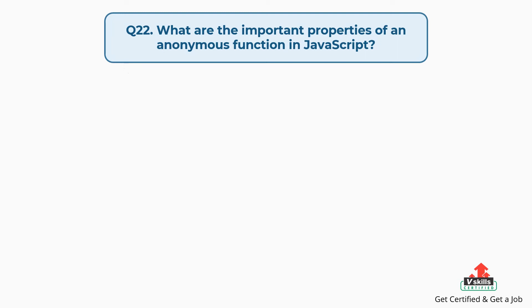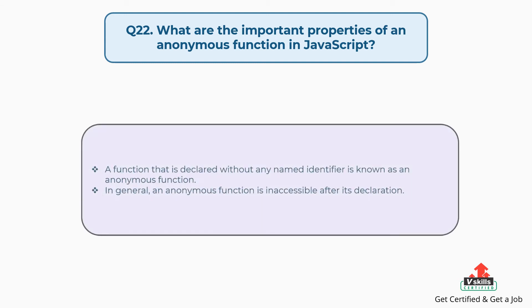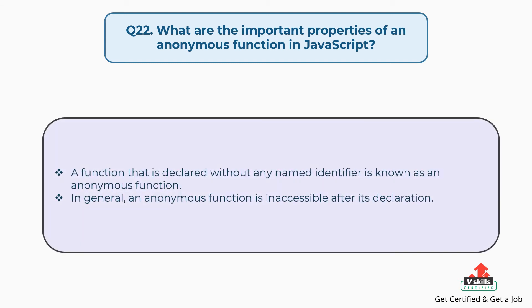Question number twenty-two: what are the important properties of an anonymous function in JavaScript? A function that is declared without any named identifier is known as an anonymous function. In general, an anonymous function is inaccessible after its declaration.